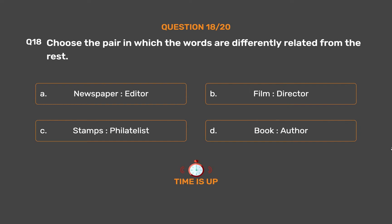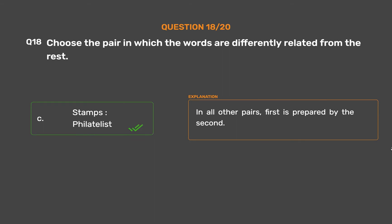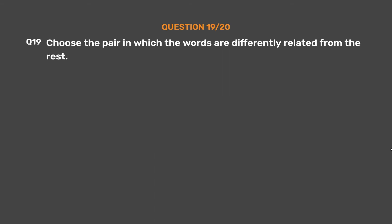The correct answer is Option C: Stamps, Philatelist. In all other pairs, the first is prepared by the second.